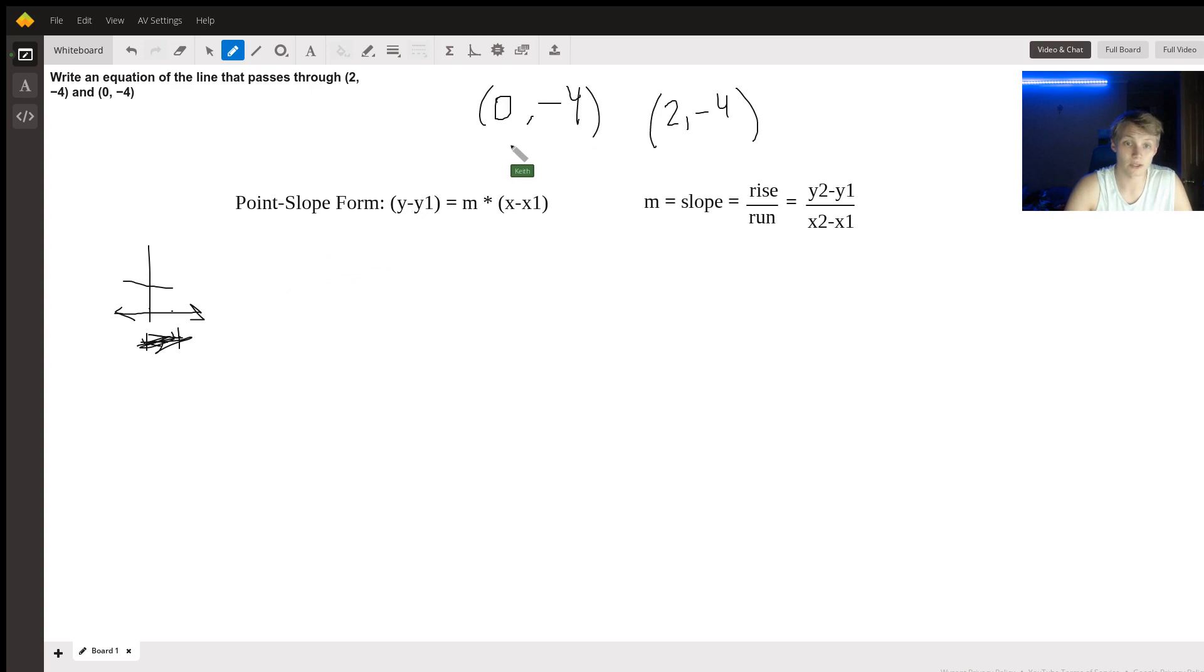So we'll just plug in. Let's see, if this is coordinate one and this is coordinate two, we'll just plug coordinate one into point-slope form and see what happens. So y minus y1, the y doesn't get changed.